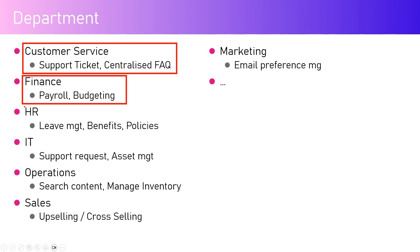For HR — Human Resources or People and Culture — we can handle leave management, benefits, and policy questions. Users can find out how many leaves are remaining, how to take a leave, or what benefits the organization provides — such as stationary equipment purchases, leave in lieu of extra work, or policies and procedures related to documentation, leave policy, or organizational benefits.